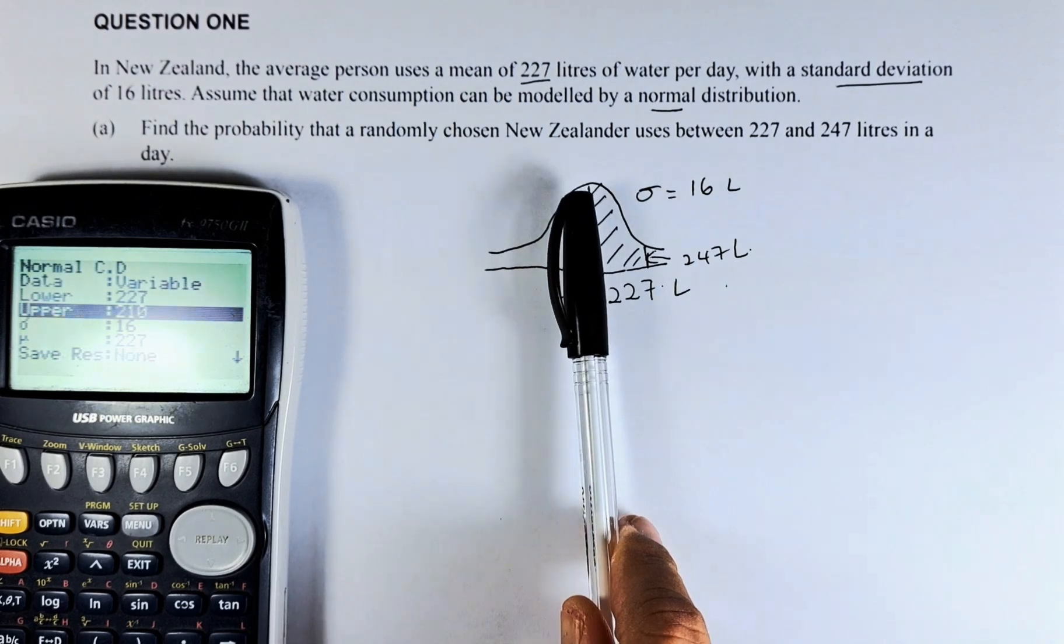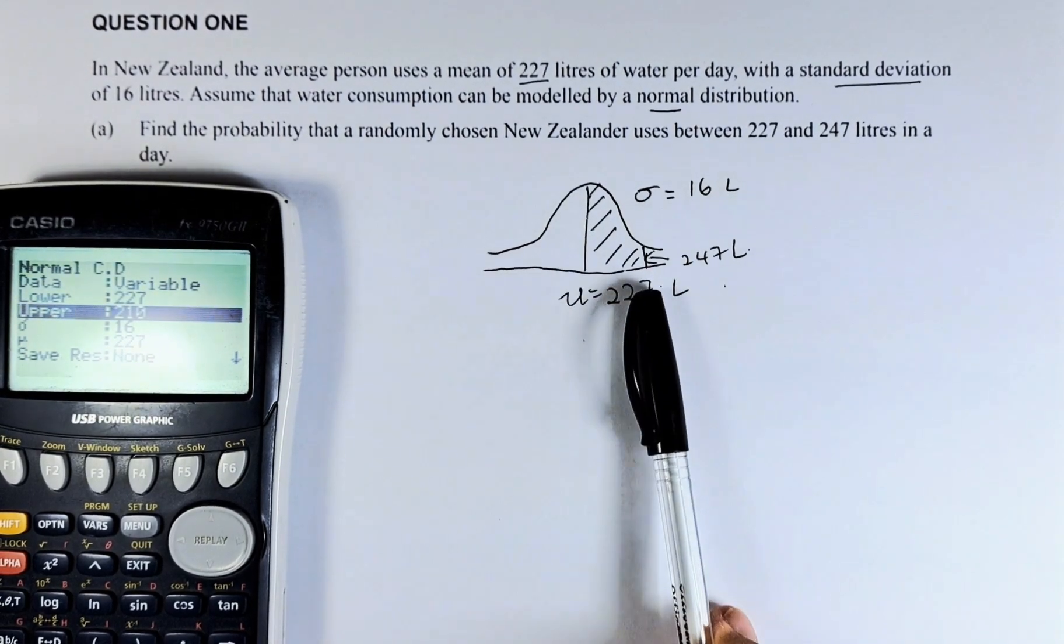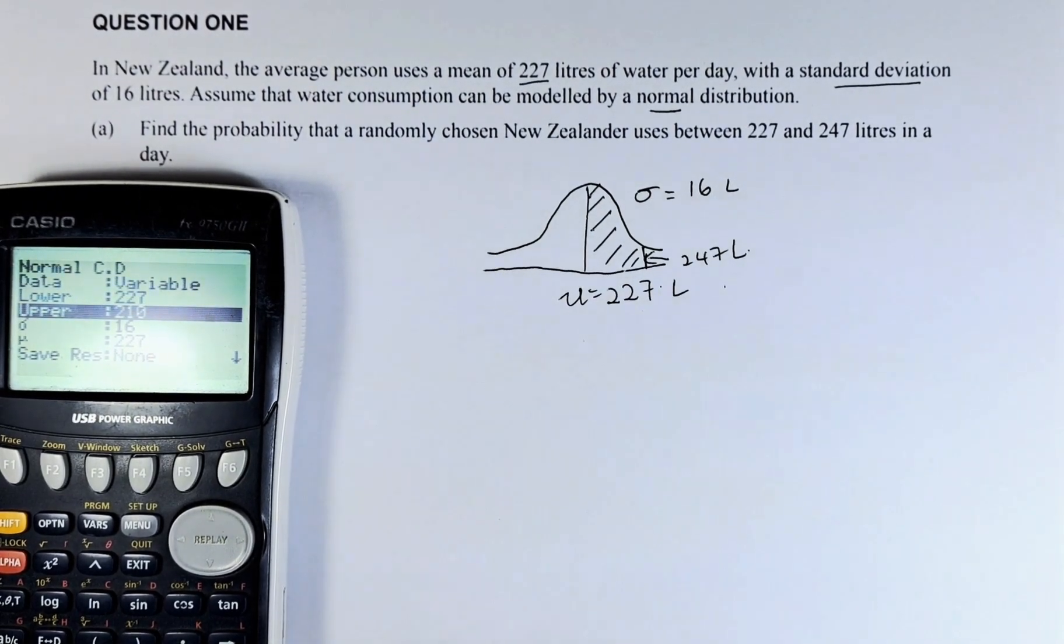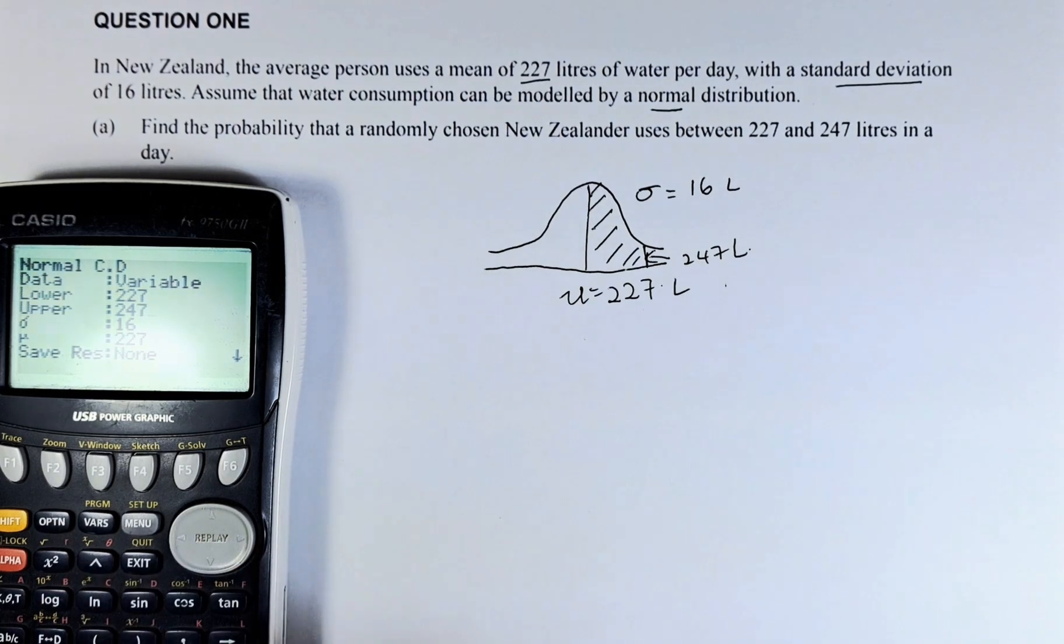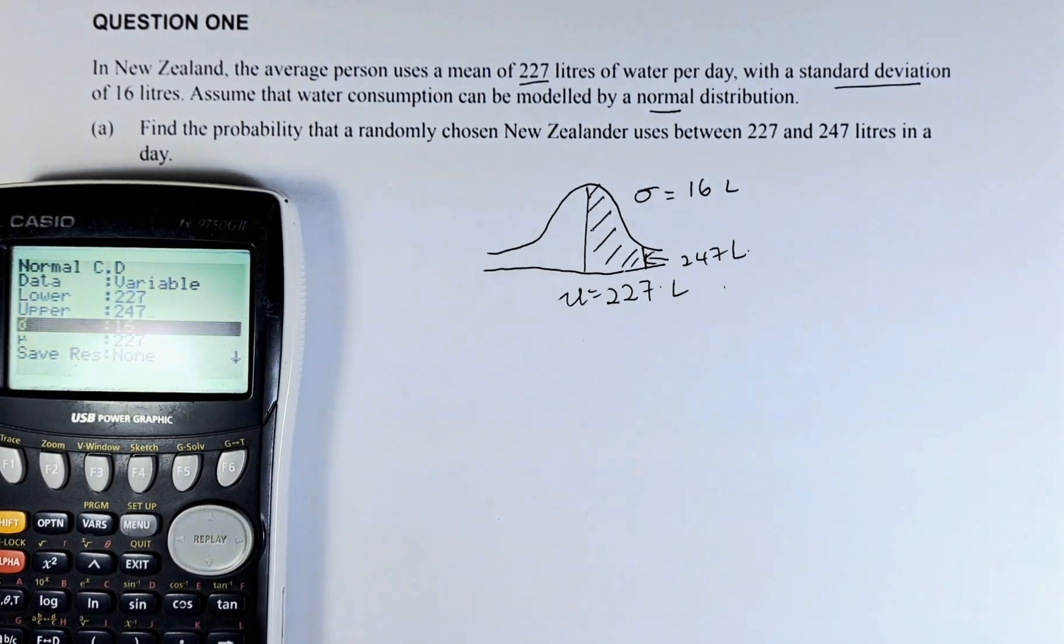And upper is where it's going to end. The area starts from 227, it's going to end at 247. And we are going to put as 247, then we are going to press execute.